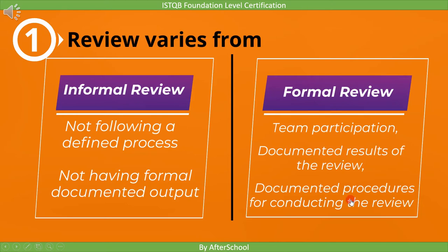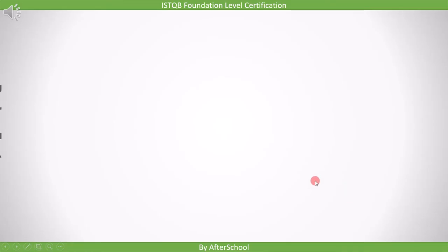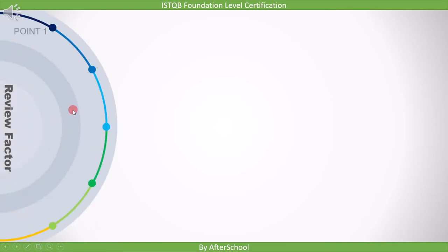Along with the result, in a formal review we also document which process we followed during the review. What you need to remember is: an informal review result and process is not documented, whereas a formal review result and process are documented. We learned that review can be of formal and informal type. Now the question is how to select the review process.